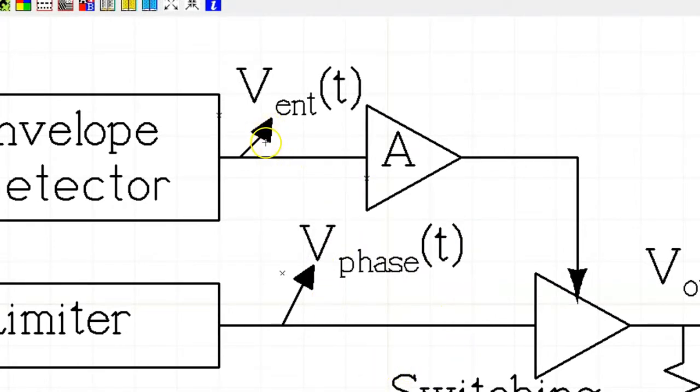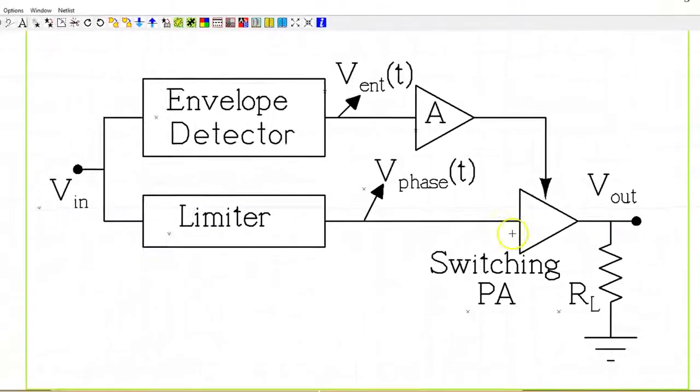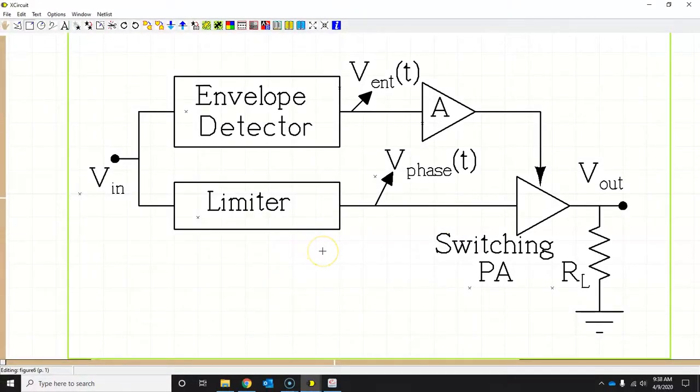So this is how you solve a problem, and then press, for example, this one, this arrow, and then press R button, and this will move this. Reducing the grid size will also help you move this nicely, nice and smoothly. So this is how you use X-Circuit